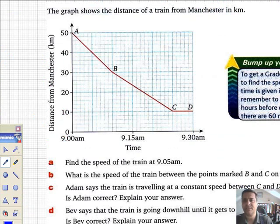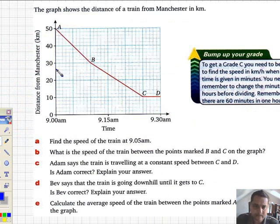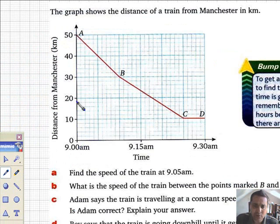The graph shows the distance of the train from Manchester in kilometres. That is zero kilometres from Manchester. So at the moment, we're 50 kilometres from Manchester. By the time we finish, we're only 10 kilometres from Manchester.